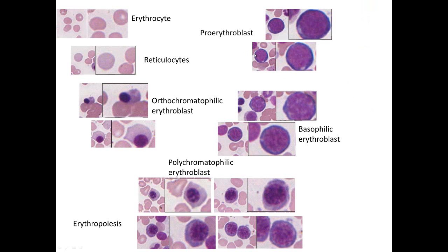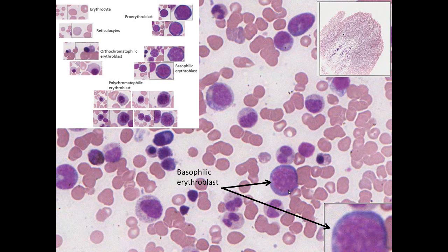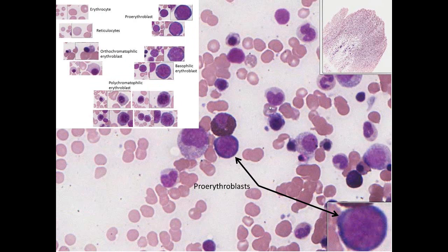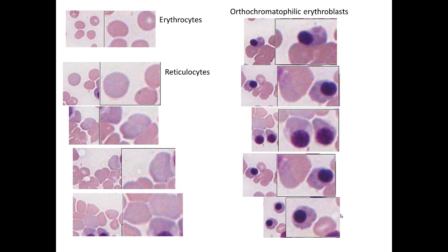The basophilic erythroblast has a thin rim of deep blue cytoplasm and a fractured face on the spherical nucleus. The most immature cell is the pro-erythroblast, which has a more homogeneous nucleus and a thin rim of deep blue cytoplasm surrounding it.